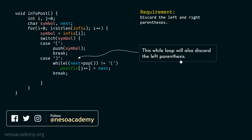So far we have implemented two cases: checking whether the symbol is a left parenthesis or a right parenthesis. Now let's see a simple example to cement these concepts.